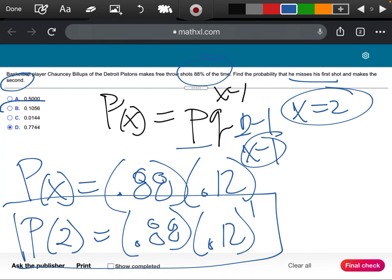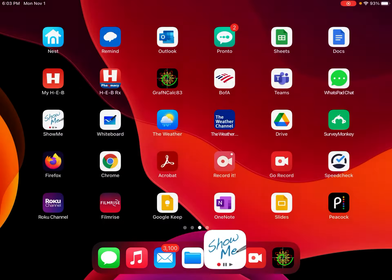When I come back over here, 0.1056 is choice B for us, so this is going to be my correct answer.